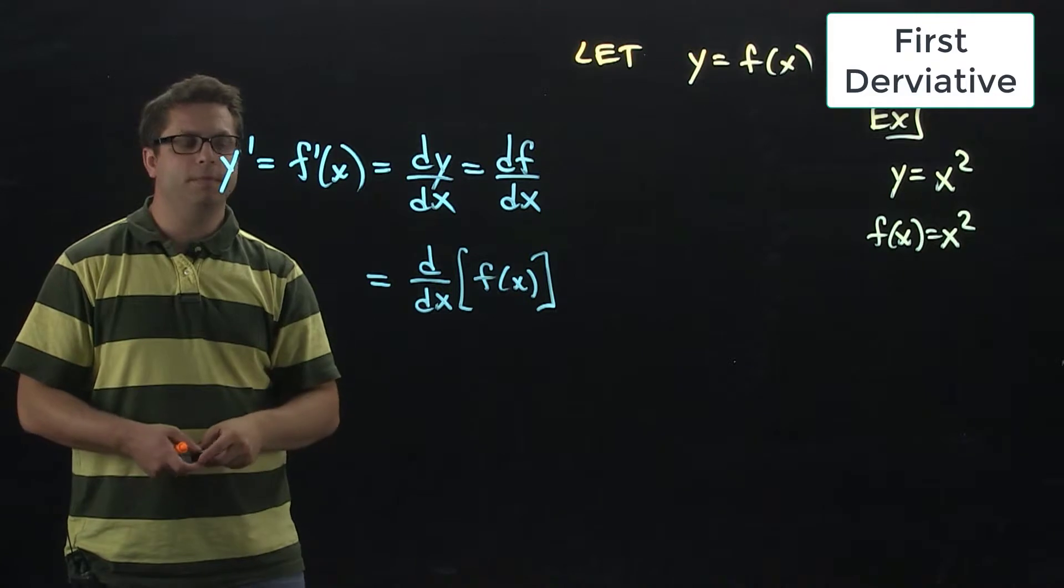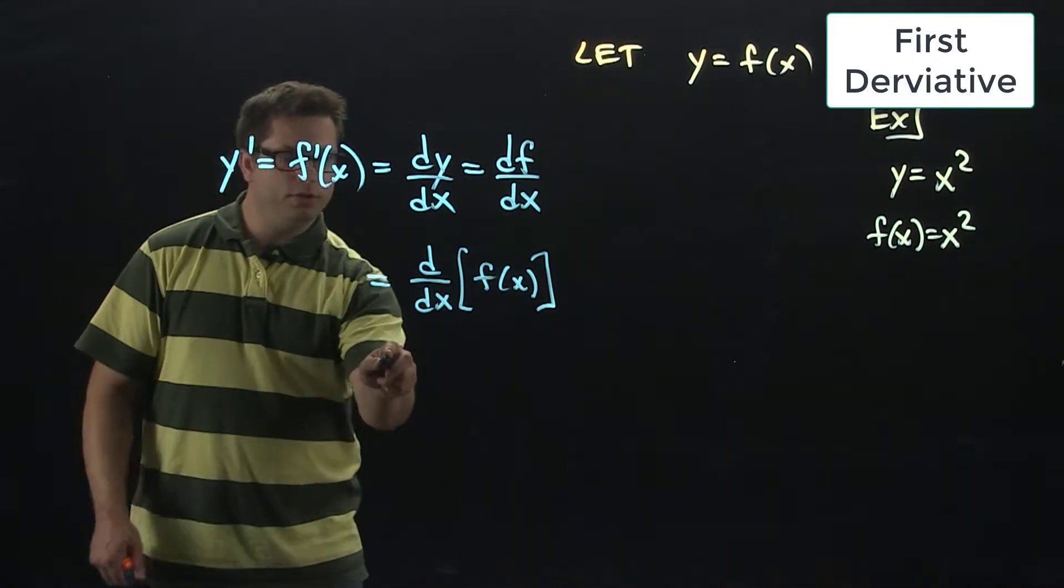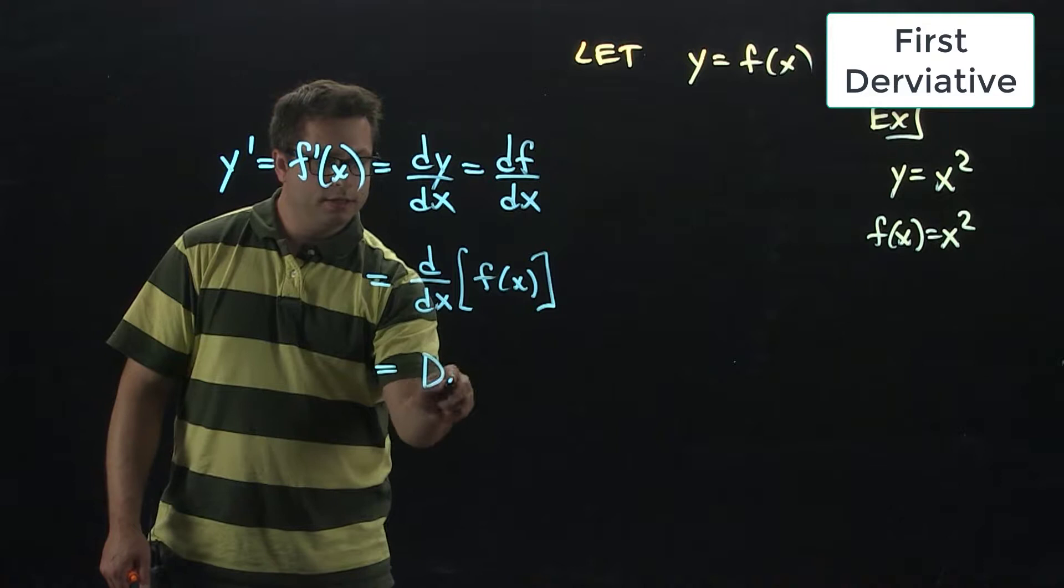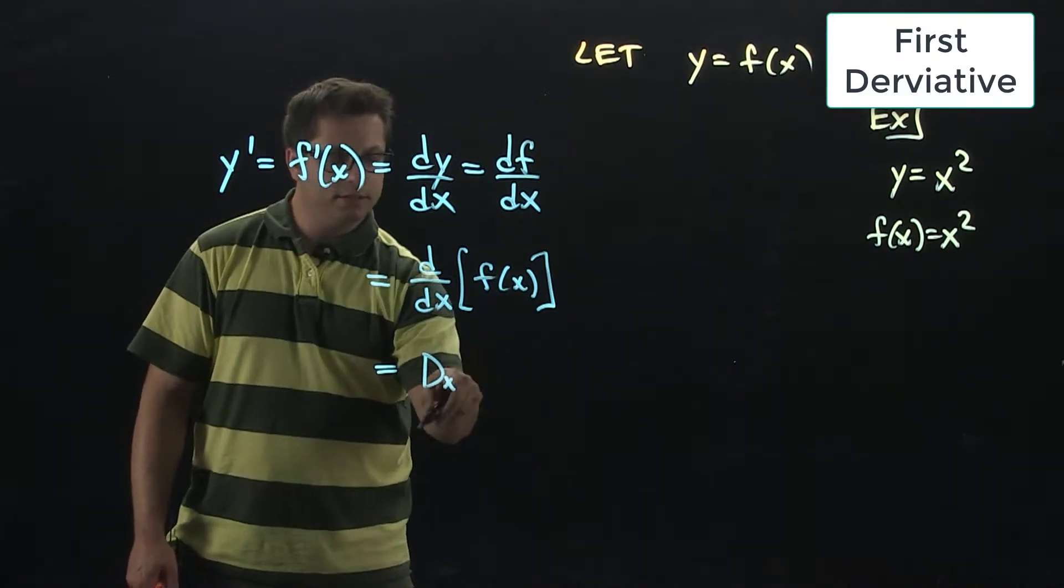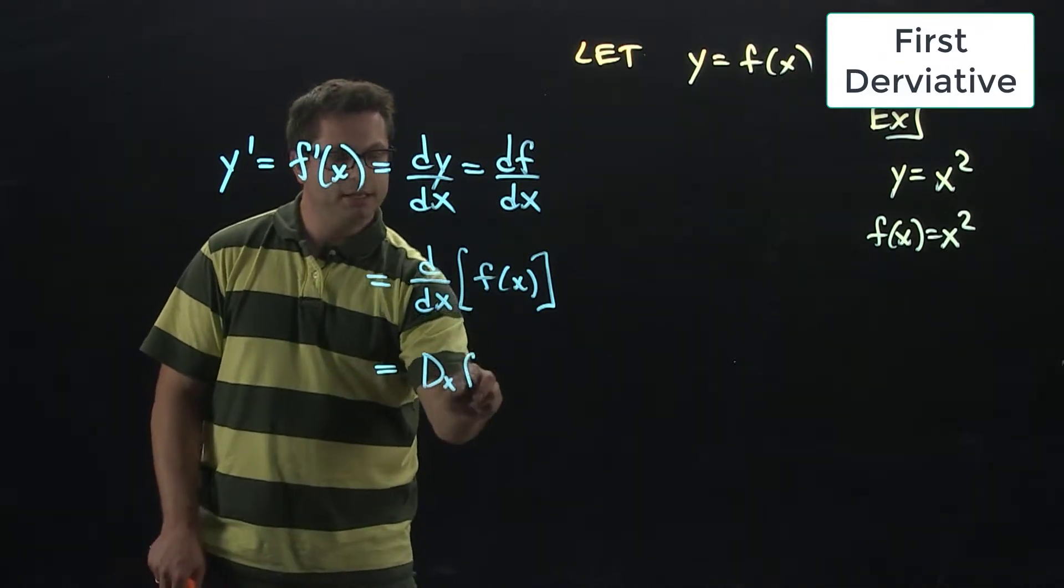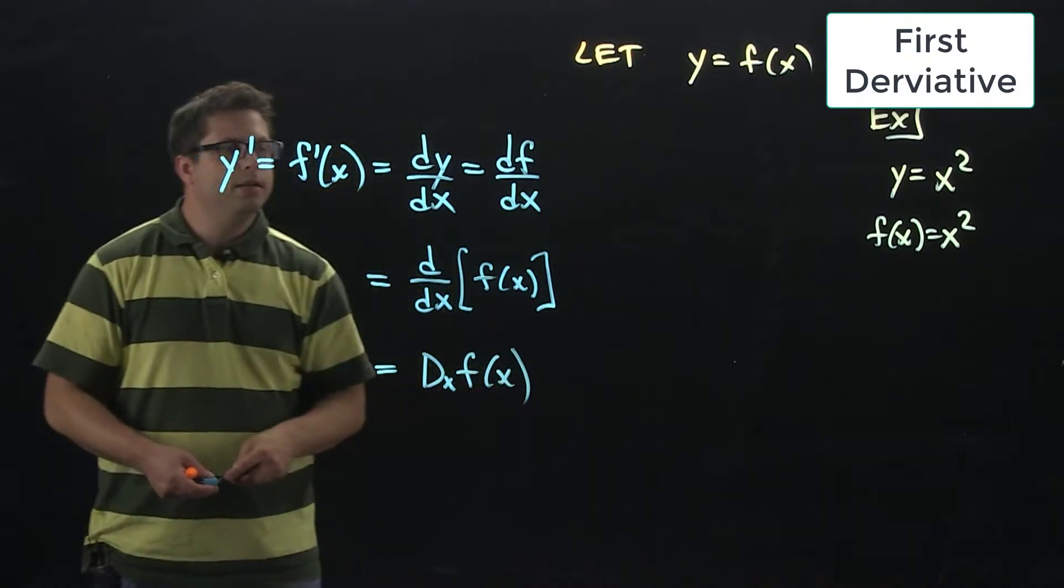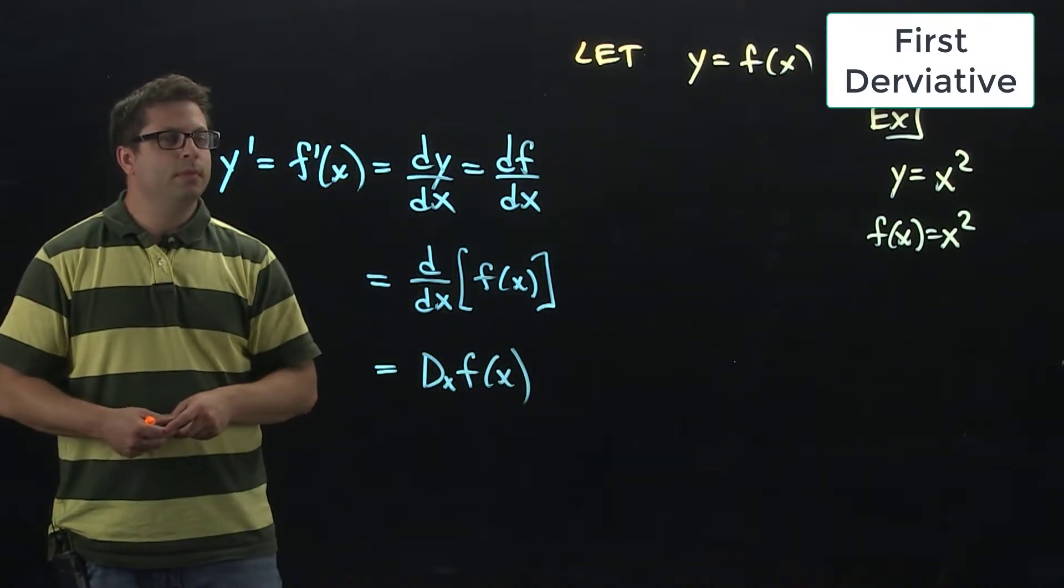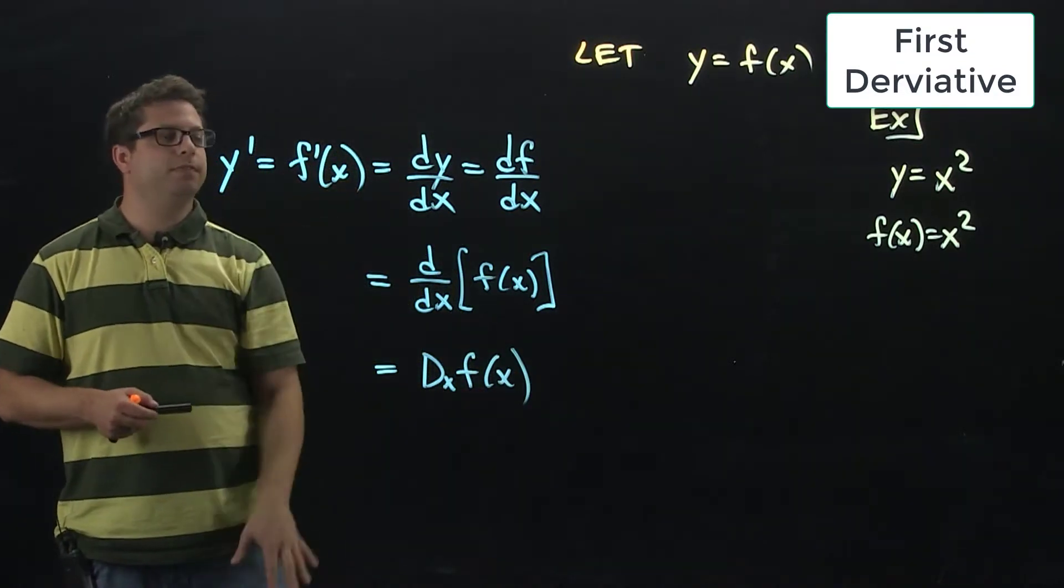These are the common ones. They might go a little further and use the big D. It looks like a subscript of x, of f of x. This is all the notations for the first derivative.